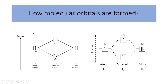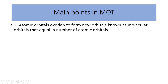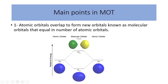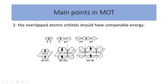I would like to clarify some main points to help you better understand molecular orbital theory, in addition to the Pauli Exclusion Principle and Hund's Rule explained in the atomic orbital video. First, atomic orbitals overlap to form new orbitals known as molecular orbitals that are equal in number to the atomic orbitals. So if two atoms each have one atomic orbital and interact with each other, it will yield two molecular orbitals. Second, the overlapping atomic orbitals should have comparable energy — only atomic orbitals that share the same or near the same energy levels will hybridize with each other.